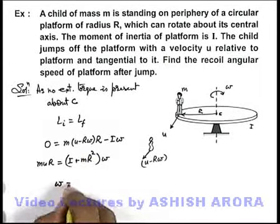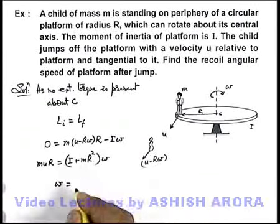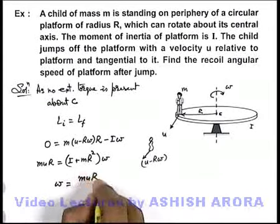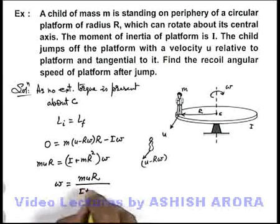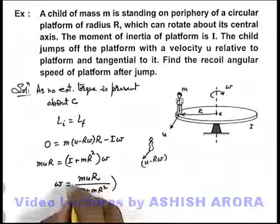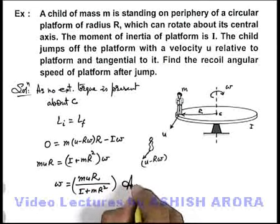The final angular speed of the platform due to recoil is m u R divided by (I plus m R squared). This is the answer to this problem.